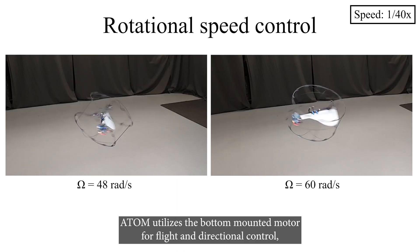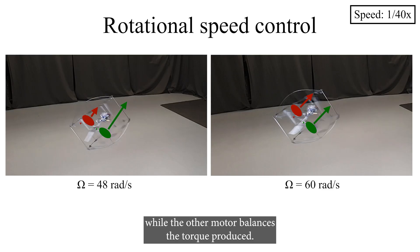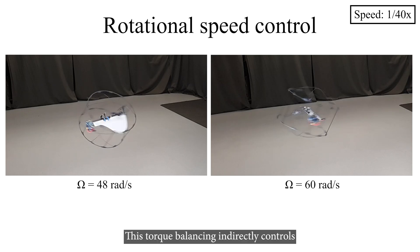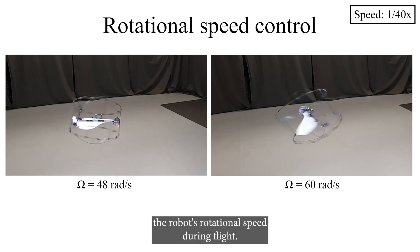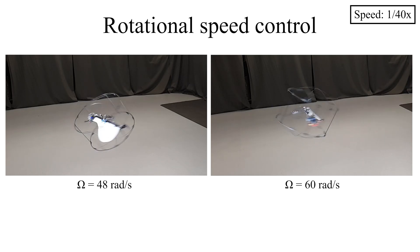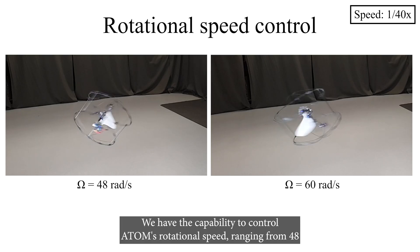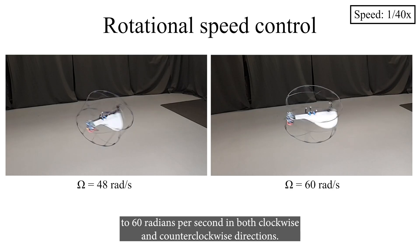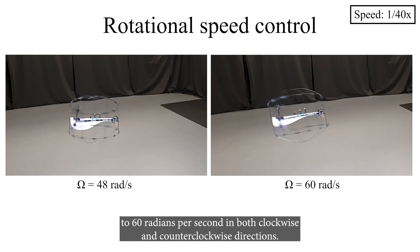In aerial mode, Adam utilizes the bottom mounted motor for flight and directional control, while the other motor balances the torque produced. This torque balancing indirectly controls the robot's rotational speed during flight. We have the capability to control Adam's rotational speed ranging from 48 to 60 radians per second in both clockwise and counterclockwise directions.